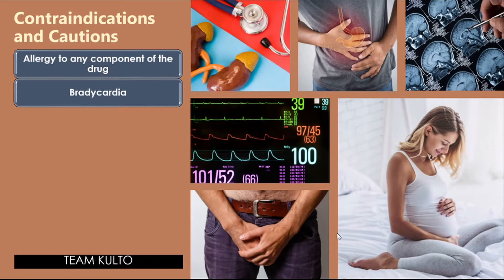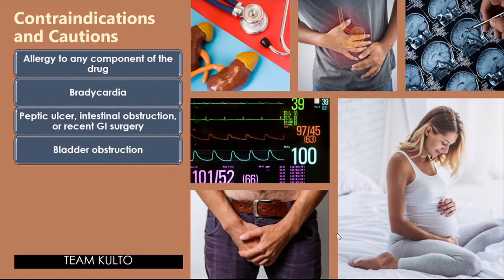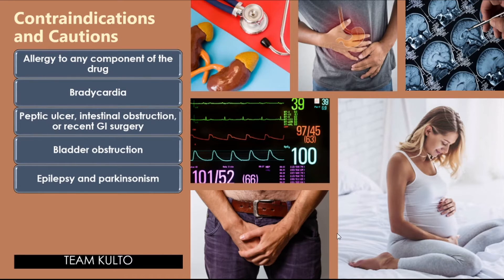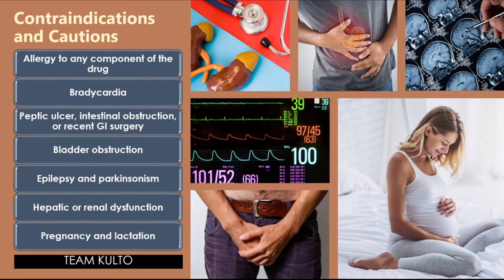Direct acting cholinergic agonists produce parasympathetic effects — everything goes down except GI and GU, meaning increased urinary frequency and bowel movements. Peptic ulcer, intestinal obstruction, or recent GI surgery can be negatively affected by the GI stimulating effects. Bladder obstruction is aggravated by the stimulatory effects on the bladder. Epilepsy and Parkinsonism are affected by stimulation of ACH receptors in the brain. Hepatic or renal dysfunction requires caution, as drugs used to treat Alzheimer's are metabolized in the liver. Use with caution in pregnancy and lactation due to potential adverse effects on the fetus or neonate.